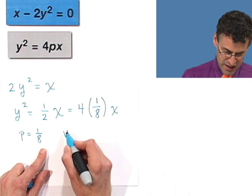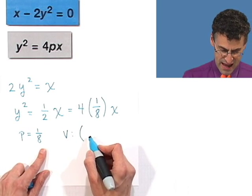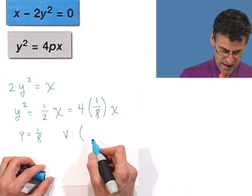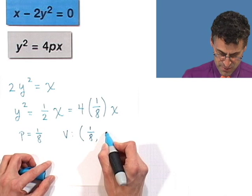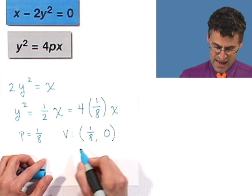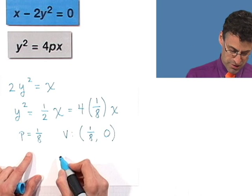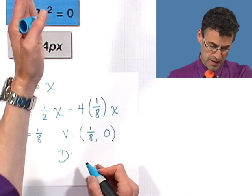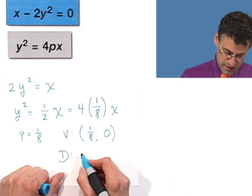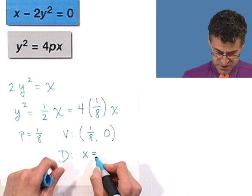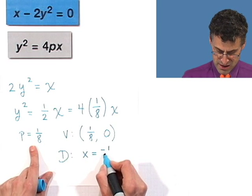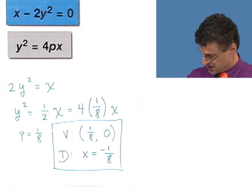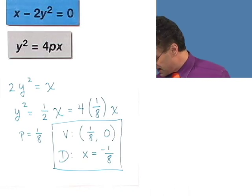Which means what? Since this is going to be a parabola that opens this way or that way, we know that the focus is going to be at a location of 1 eighth comma 0. It's going to be on the x-axis. And that also tells us where our directrix is. Our directrix, which is going to be a vertical line, is going to be x equals the opposite of the p, so minus an eighth.